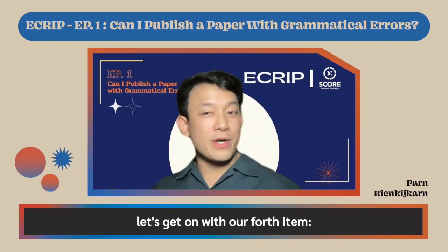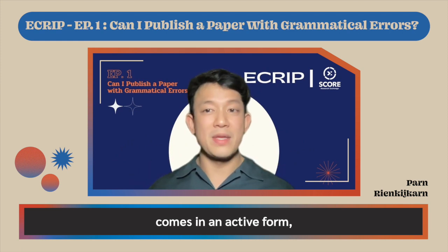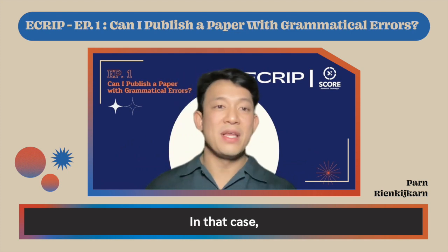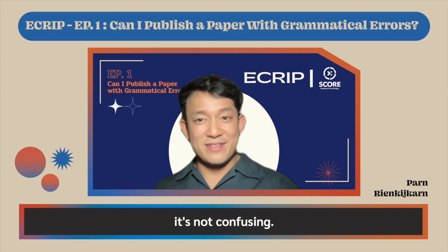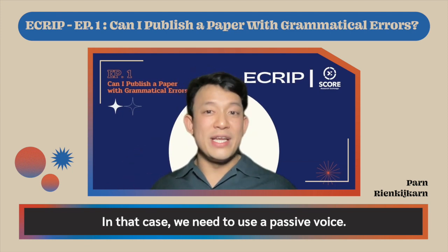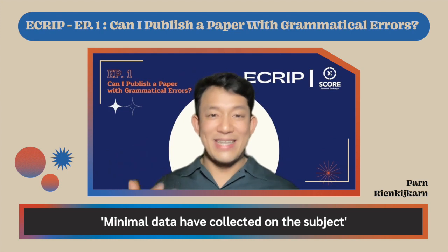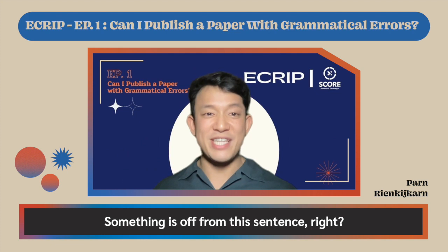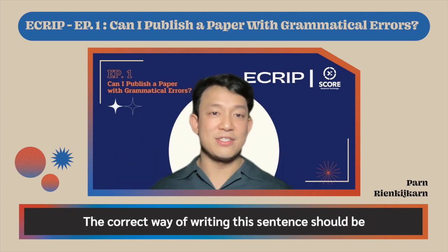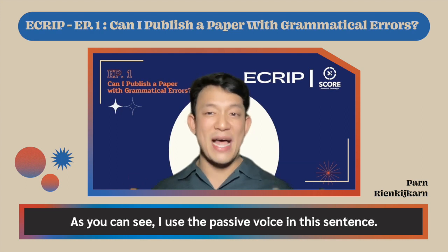Let's get on with our fourth item: passive and active voice. The majority of sentences in English come in an active form, meaning there is a subject that does something in the sentence. But sometimes we don't know exactly who the subject is — in that scenario, we need to use passive voice. For example: 'Minimal data have collected on the subject' — something is off with this sentence, because data cannot collect themselves. The correct way is: 'Minimal data have been collected on the subject,' using passive voice.